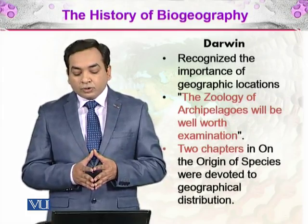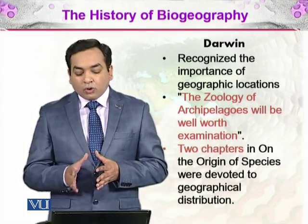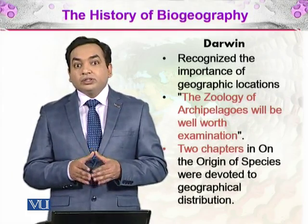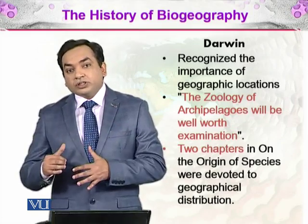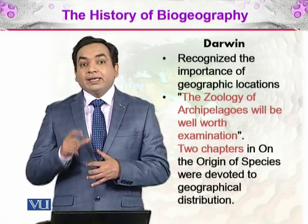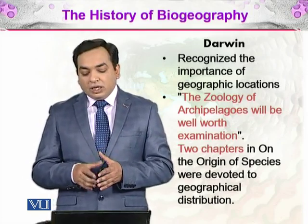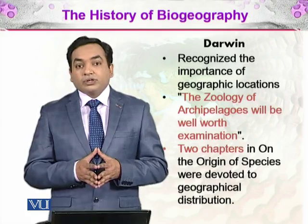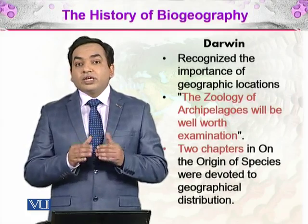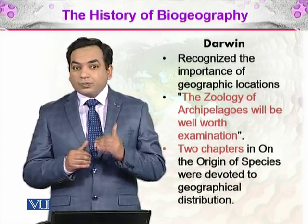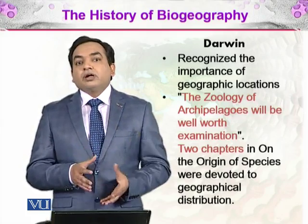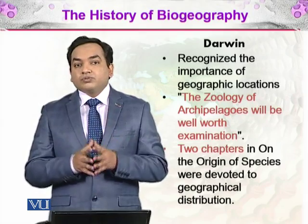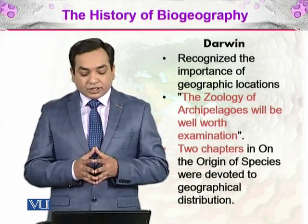Darwin wrote two chapters in 'On the Origin of Species' devoted to the geographical distribution of organisms. In that book, he gave important ideas about geographical distribution. In a way, biogeography was an inspiration — it was the factor that led Darwin to determine the theory of evolution by natural selection, which we will discuss in detail.